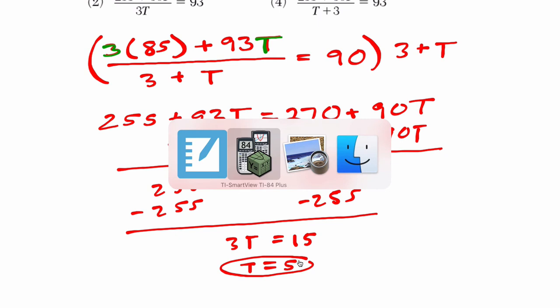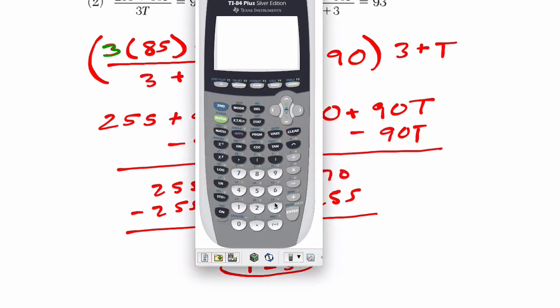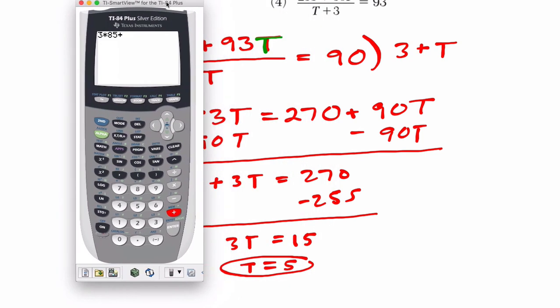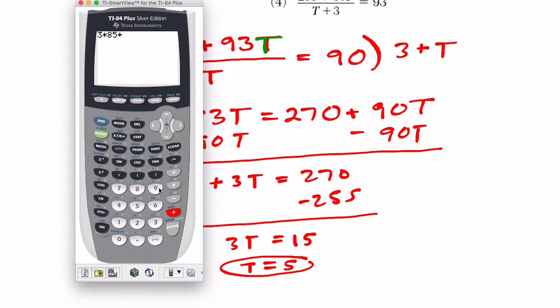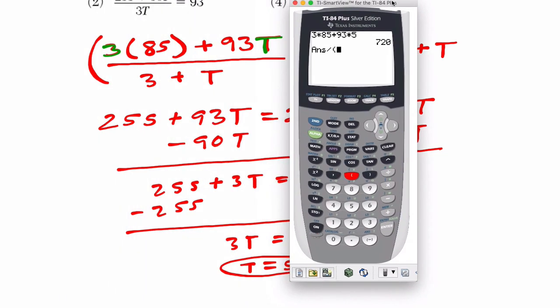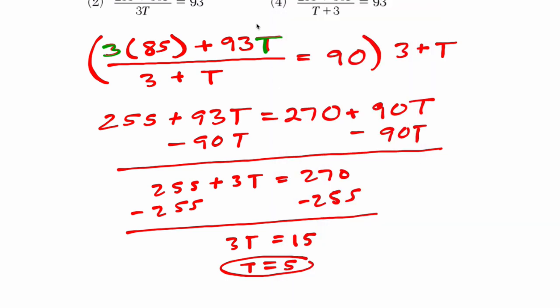Now, on the calculator, if I quickly plug this in, I can see that I'm correct. 3 times 85, oops, don't need that bracket there, plus 93 times 5, enter. I get 720. I'm going to divide that by 3 plus t. That's what my expression tells me to do here. So I'm dividing it by 8 because 3 plus 5 is 8, and t is 5. And I get the average of 90, which checks out in this problem.